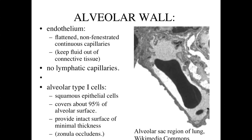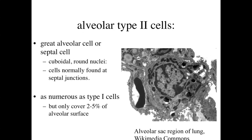The alveolar type 1 cells minimize thickness to allow for very rapid diffusion. Type 1 alveolar cells cover about 95% of the alveolar surface — the majority of the airways — again to minimize the diffusion distance needed.